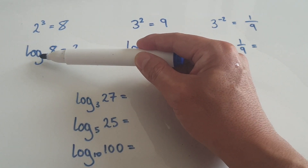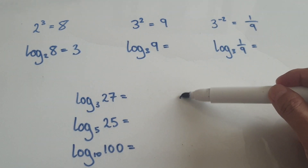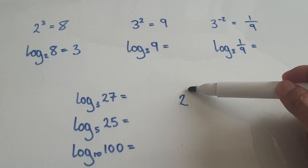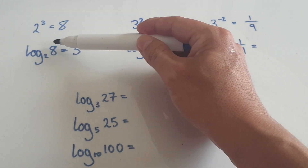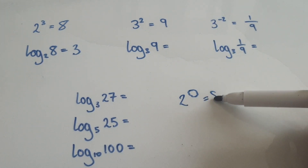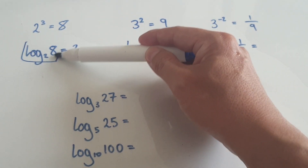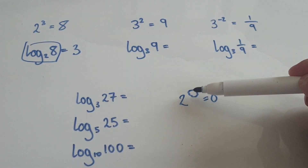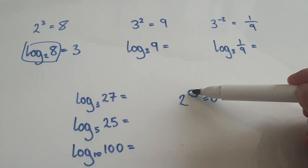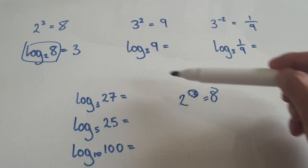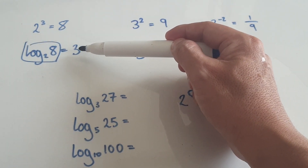You're right to zoom into the base, into the 2. 2 to the power of what equals this number here — equals 8. The whole log block here is talking about this index here. It turns out to be the number 3, so this whole block here equals 3.